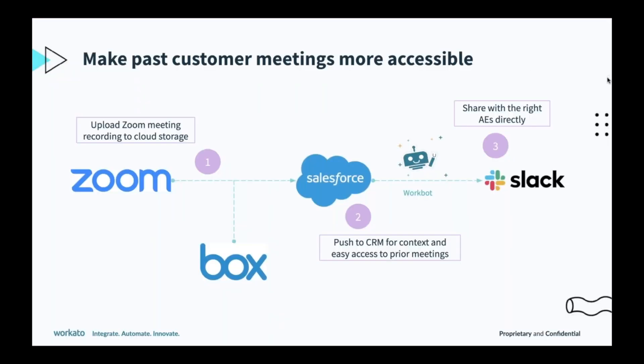So one thing that we've built is an automation that makes past customer meetings much more accessible. Similar to the event webinar process flow that Raina just showed, Workado will monitor the Zoom recording and wait until it's done being uploaded. Then it takes that Zoom recording and puts it into Box or any other repository like Google Drive, puts it into your CRM for context, and also lets the AE know that the notes are ready in Slack — or it could be any communication tool like Teams or a direct email to the AE. These are not app-specific workflows.